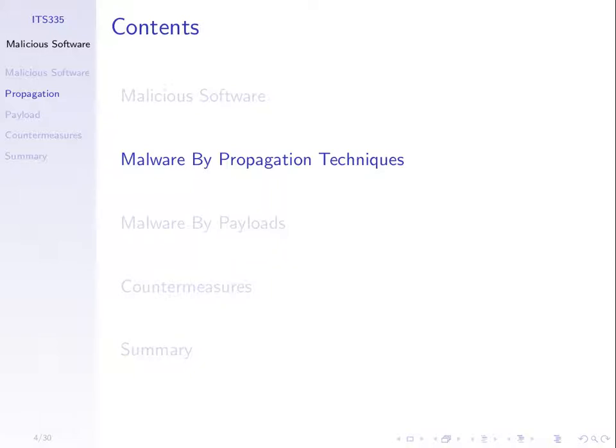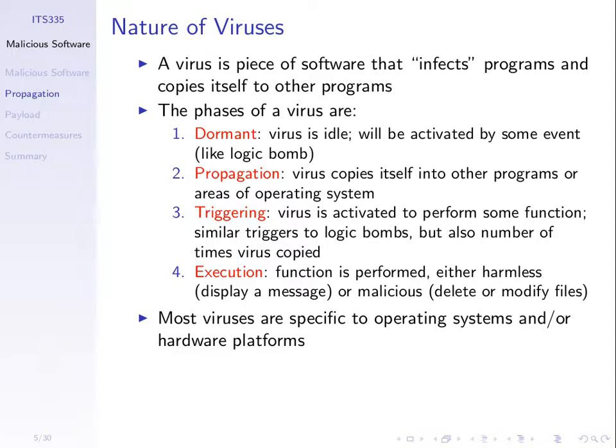First, let's look at propagation techniques. A virus is a piece of software that infects other programs. Think of a normal program like word.exe — Microsoft Word's executable file on your computer. A virus attaches itself to other programs such that when that normal program executes, the virus also executes. A virus has a host, usually a normal program, and generally may go through four different phases.